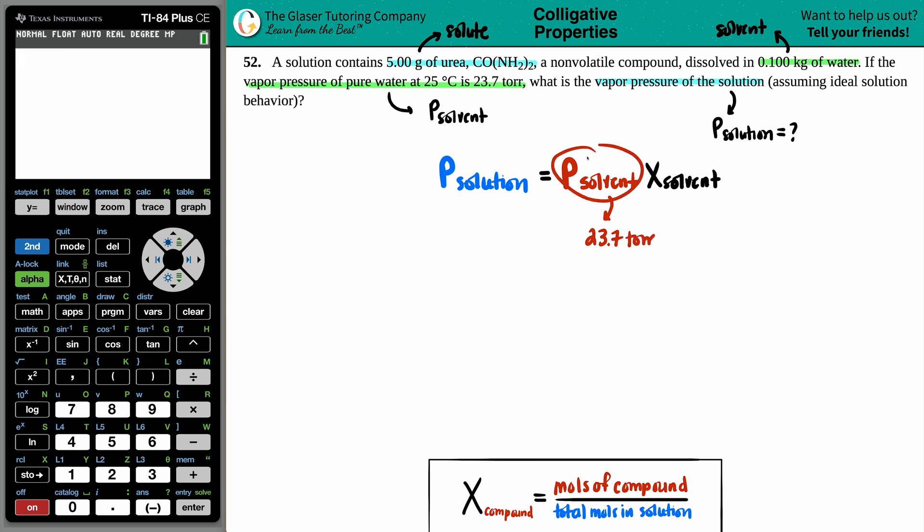So it's that pressure of the solvent times by X of the solvent. Now, what is X? X is generally the variable that we're solving for. But in chemistry, if you have an X, that means that you're dealing with a mole fraction. And specifically, we want the mole fraction of the solvent, which is the H2O. Well, they didn't give us that, though. They just talked about grams and kilograms. But if I want to find out that pressure of the solution, I need to find out that mole fraction.